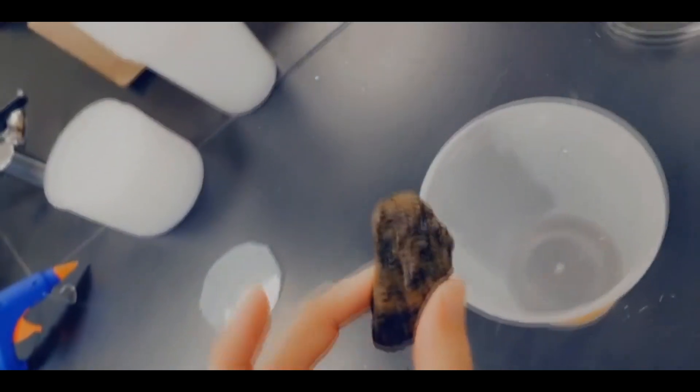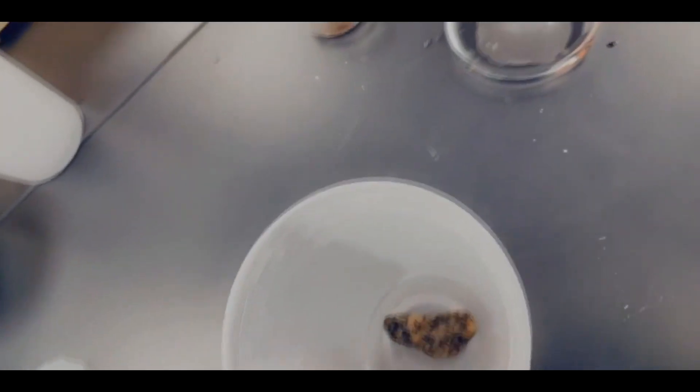One thing you need to put in here before you put your nymph in is something for the nymph to hold on to. I'm going to use this piece of granite right here. Let's put that right in the bottom of the container.